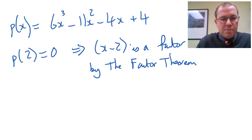So let's assume that we've put 2 into the polynomial and got 0, so the remainder is 0 when x minus 2 is divided into the polynomial, so we know x minus 2 is a factor by the factor theorem.